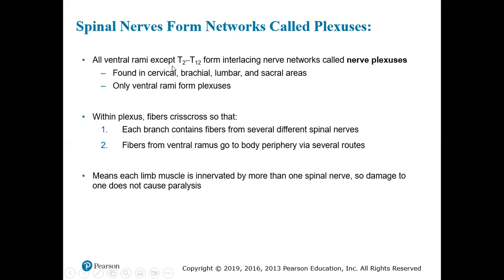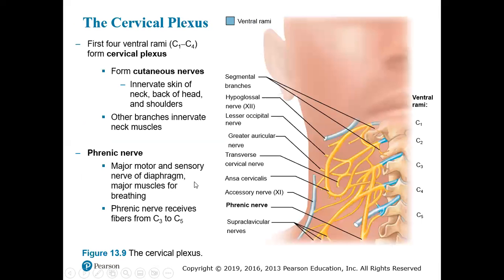All ventral rami except T2 through T12 form interlacing nerve networks called nerve plexuses. These are found in the cervical, brachial, lumbar, and sacral areas, and only ventral rami will form the plexuses. Within a plexus, the fibers crisscross, so each branch will contain fibers from several different spinal nerves. The fibers from the ventral ramus go to the body periphery via several roots, meaning each limb muscle is innervated by more than one spinal nerve — so damage to one does not cause paralysis.